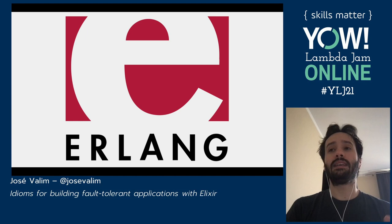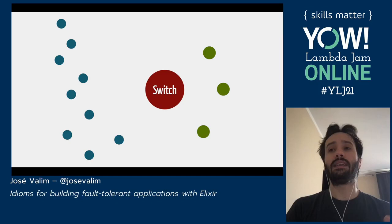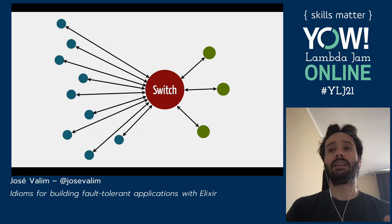Ericsson, as a telecommunication company, was building telephone switches. A telephone switch needs to connect person A to talk to person B, and it should handle as many people talking at the same time as possible. So this needs to be a highly concurrent runtime. But not only that — sometimes you want to call somebody in another city or another neighborhood, and there is another telephone switch. Those machines need to be able to communicate with each other and distribute information.